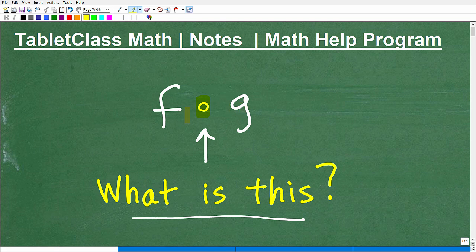Now, what we're talking about is functions. So this is function f and function g. And we have this little dot or circle in between them. And we want to know, what is this? What does this mean?